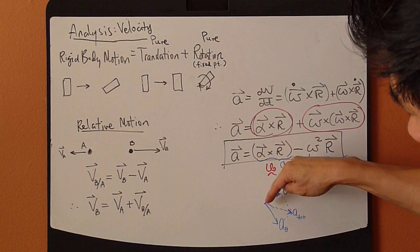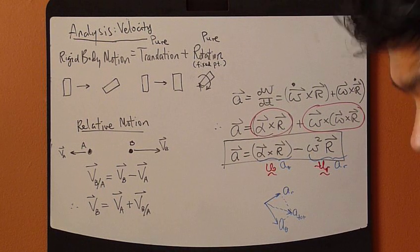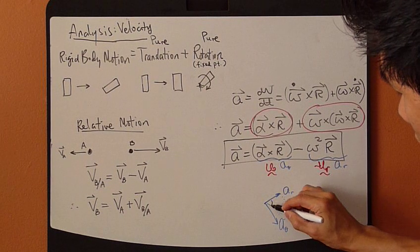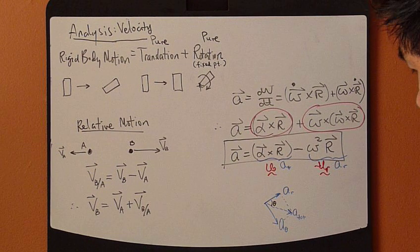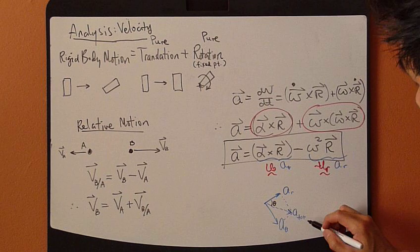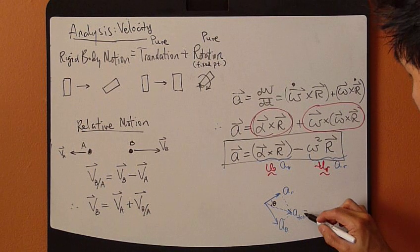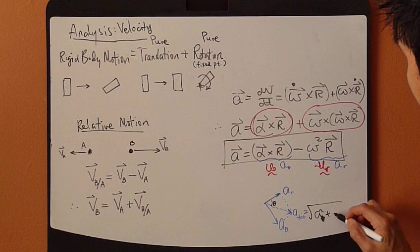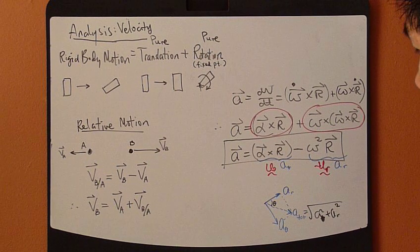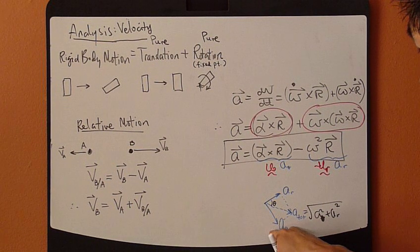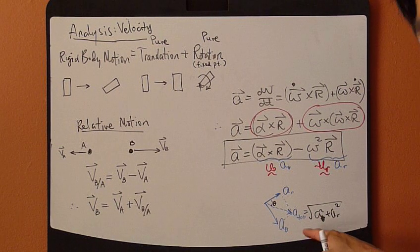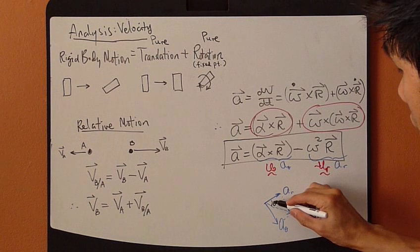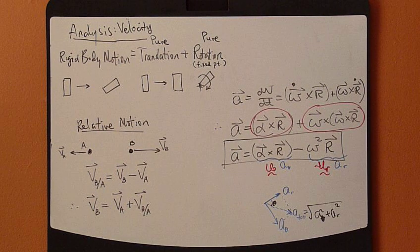The magnitude of the total acceleration is given by the square root of a_theta squared plus a_r squared. And you can find the angle for the direction of this total acceleration.